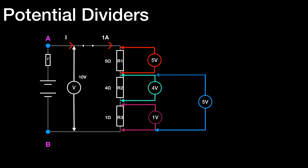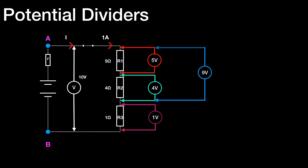If you were asked the voltage between the bottom of R3 and the top of R2, you'd add 4 volts and 1 volt to get 5 volts. So if you put a multimeter across R2 and R3 — as shown by the blue voltmeter — you would measure 5 volts. If you put a voltmeter across R1 and R2, you would measure 9 volts: that's 5 volts plus 4 volts. This approach works for any number of resistors — 2, 3, 4, 5 or more.